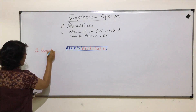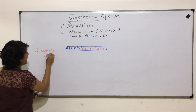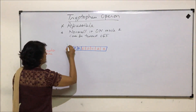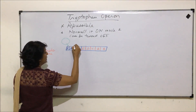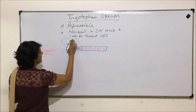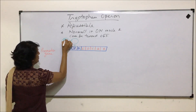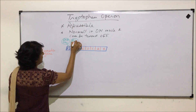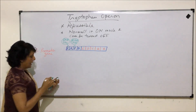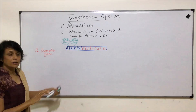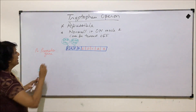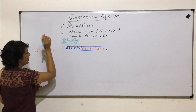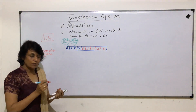The P here stands for the promoter gene, and the promoter gene is the site where RNA polymerase attaches. So here is one RNA polymerase and here is another RNA polymerase — this is the enzyme RNA polymerase.